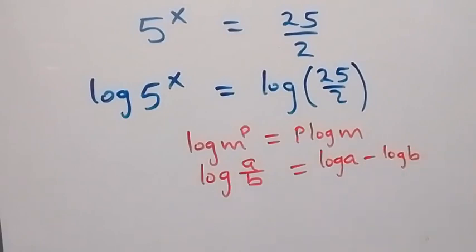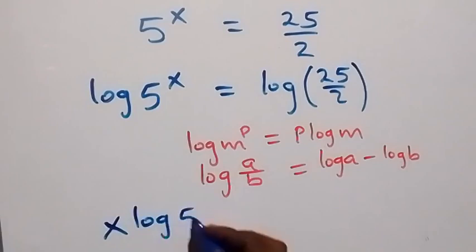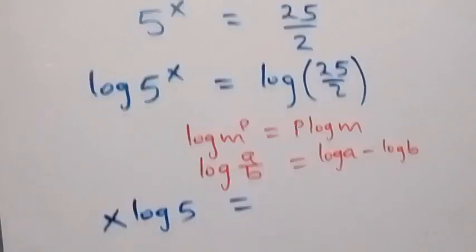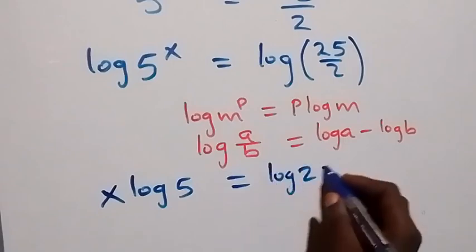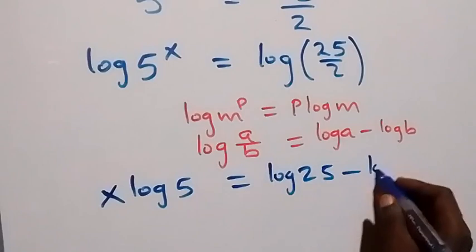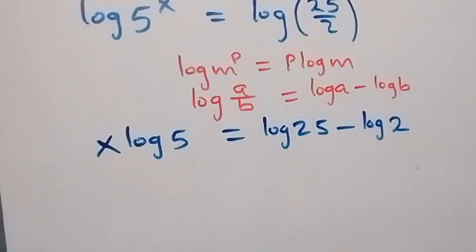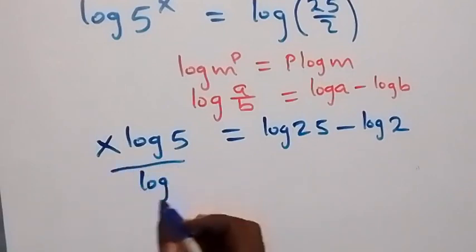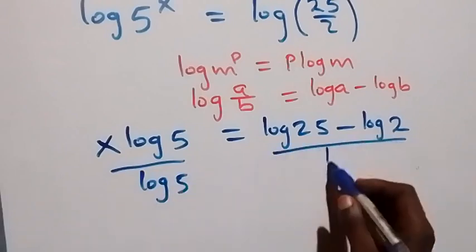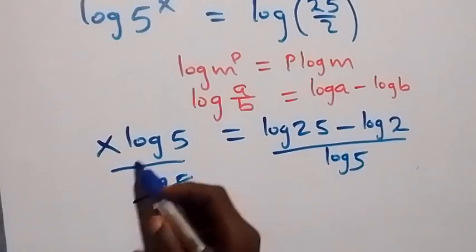From here, x comes to the front: we have x log 5 equals log 25 minus log 2. Then we divide both sides by log 5, and log 5 cancels on the left side.